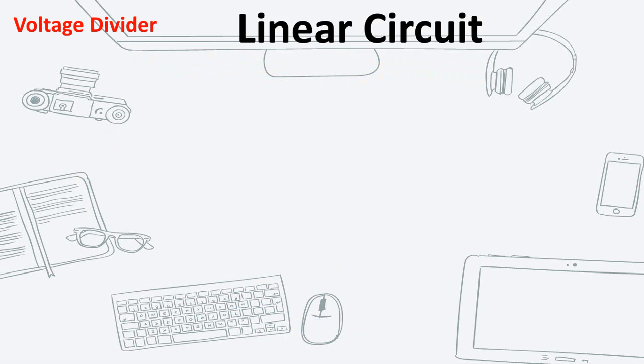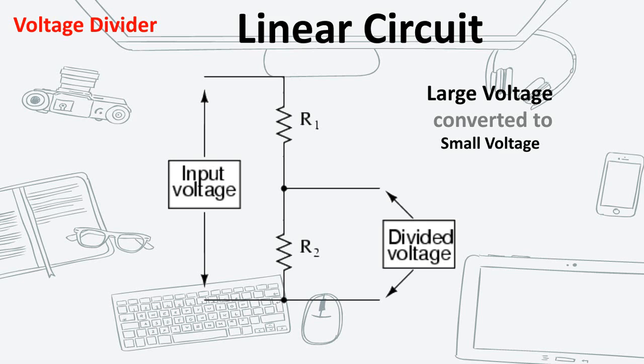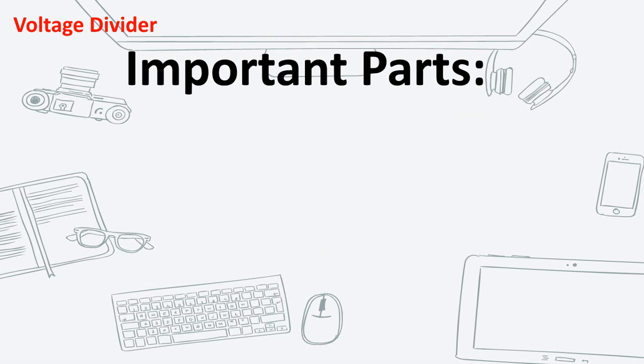A voltage divider is a linear circuit that converts a large voltage to a small one, using only two series resistors. An input voltage is converted to an output voltage that is just a fraction of that input. Voltage divider is one of the fundamental circuits in electronics.